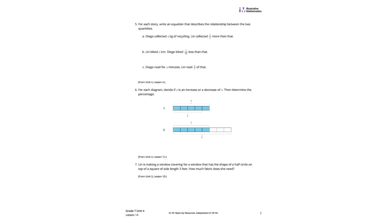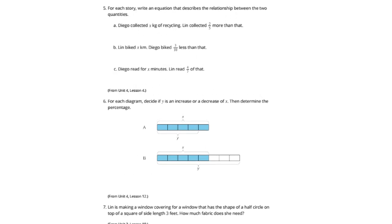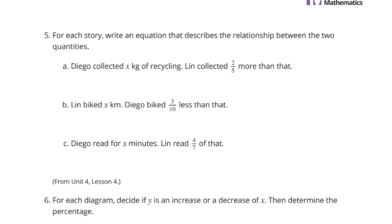For each story, write an equation that describes the relationship between the two quantities. Diego collected x kilograms of recycling. Lynn collected 2/5 more than that. We could say y equals Diego's x plus 2/5 more, which would be 2/5 x. To simplify that, we could say y equals 1 and 2/5 x.